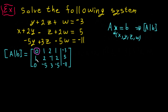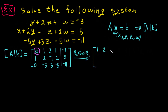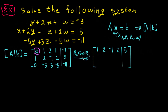Now we need to make the leading entry 1. The easiest way is to swap rows: exchange row 2 with row 1. So the new first row becomes 1, 2, -1, 2, 5, and we close the augmented matrix. The remaining rows are: 0, 1, 2, 1, -3 and 0, -5, 3, -5, -11.